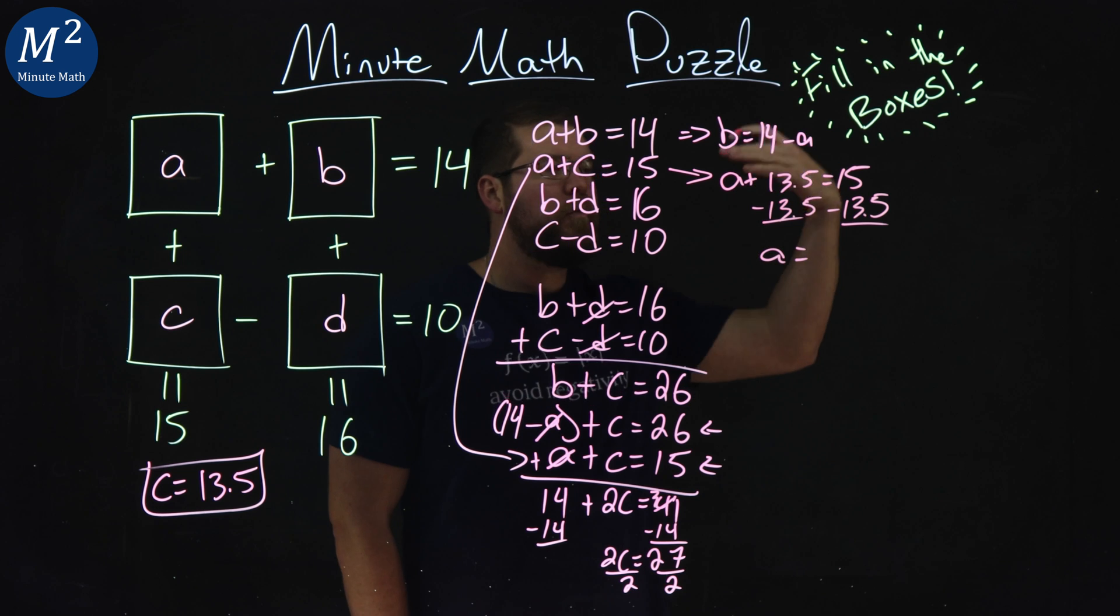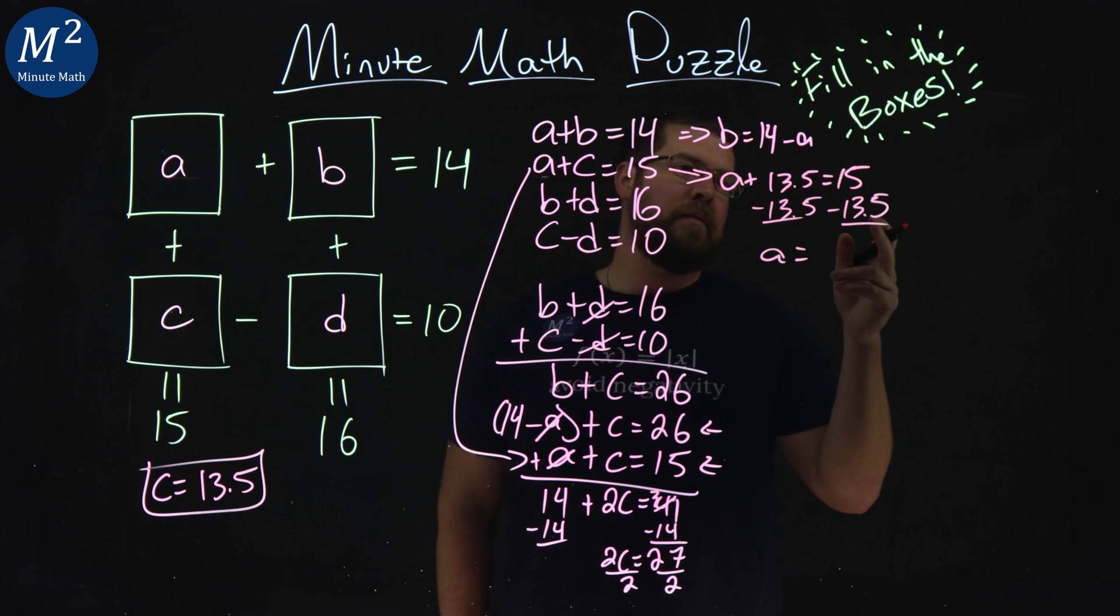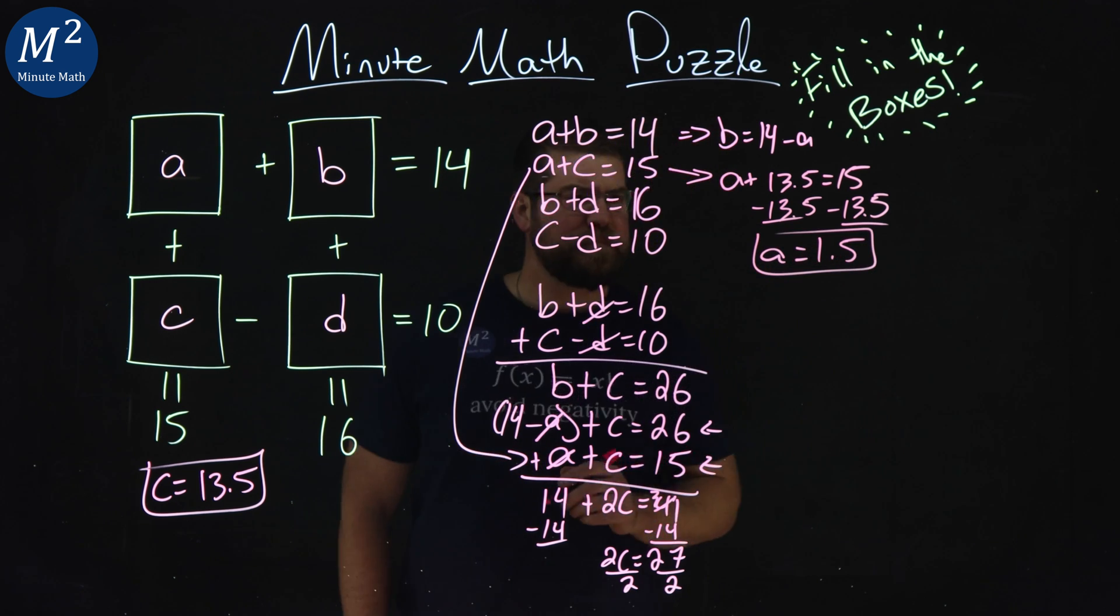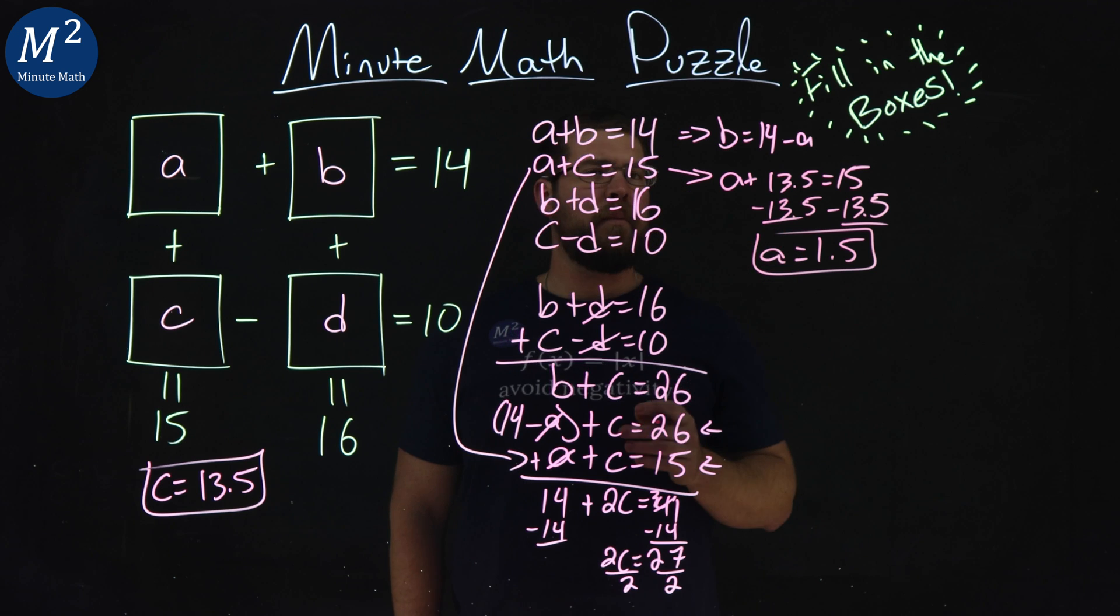A equals 15 minus 13.5, that's going to be 1.5, right? Yeah, 1.5 for A. Got that right here. Keep on going. A is 1.5.